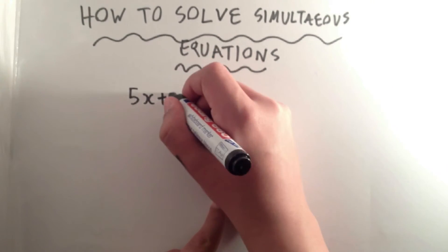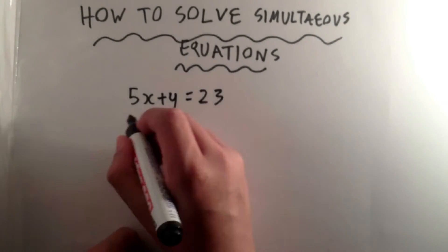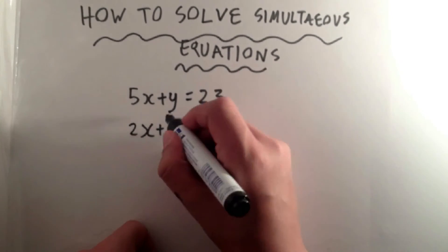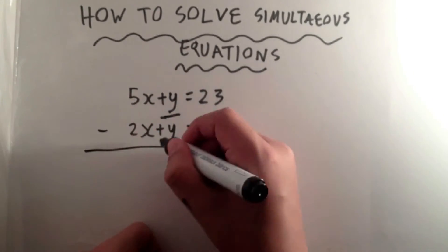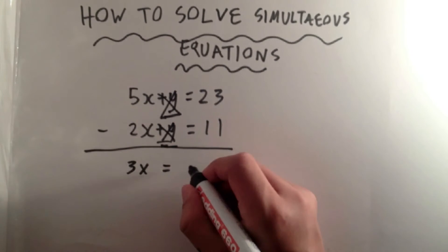Firstly, you start with two equations like so. Then you find out that both of them have a plus x or plus y. When you subtract, you find out that these variables cancel out.